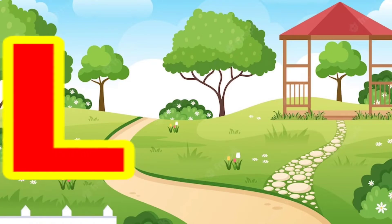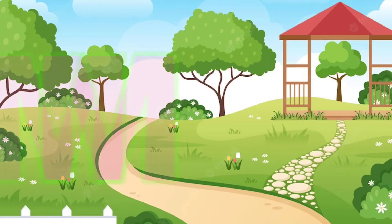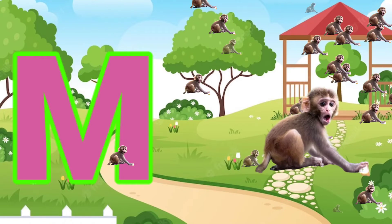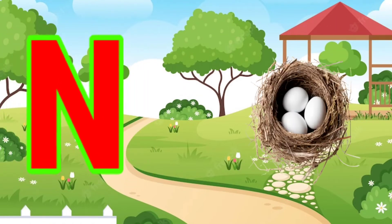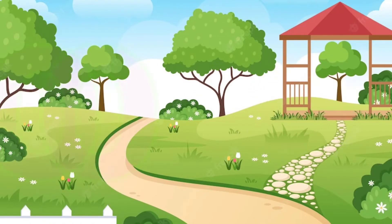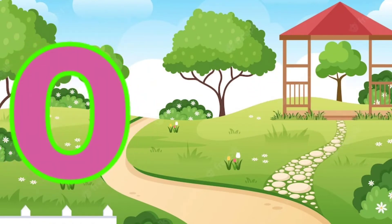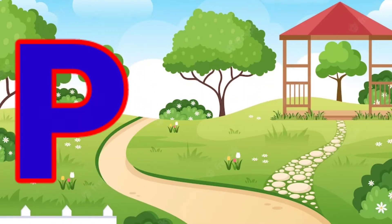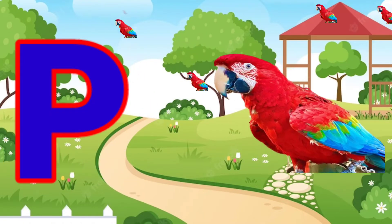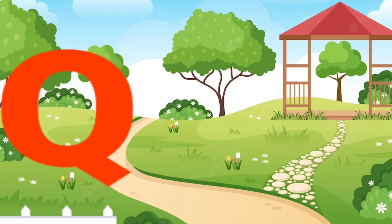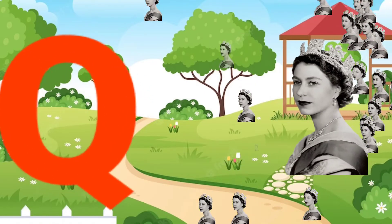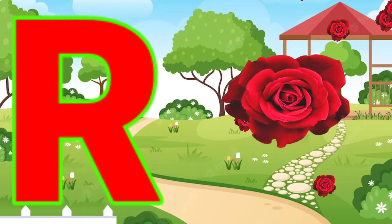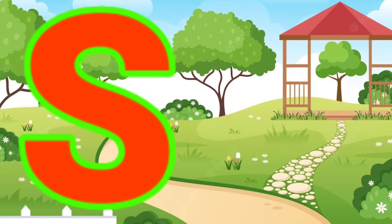L for lion, M for monkey, N for nest, O for orange, P for pirate, Q for queen, R for rose, S for sun.